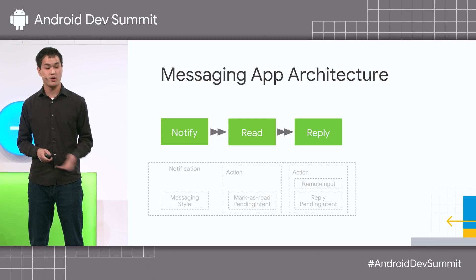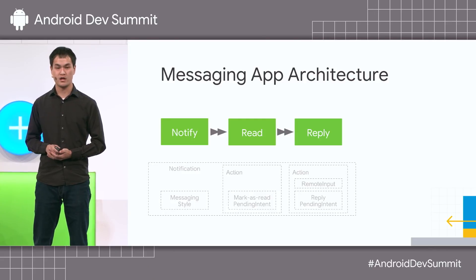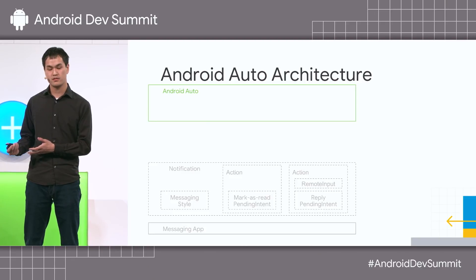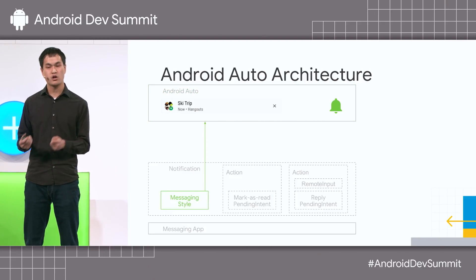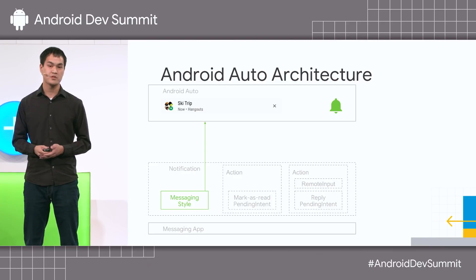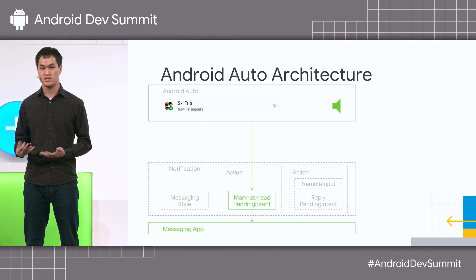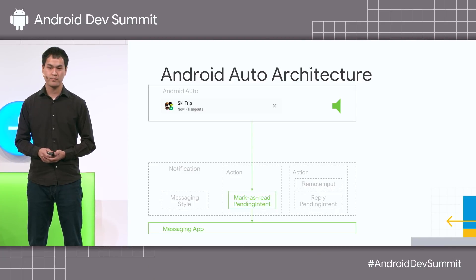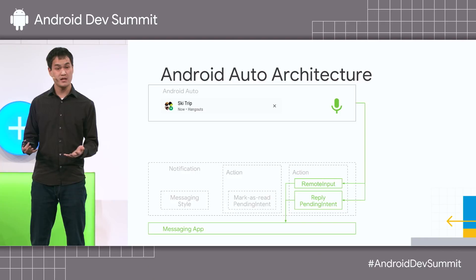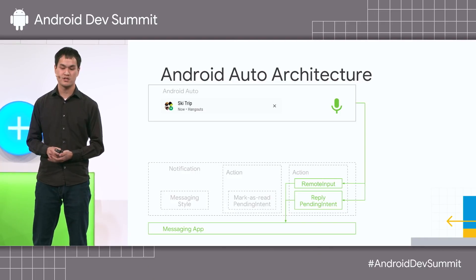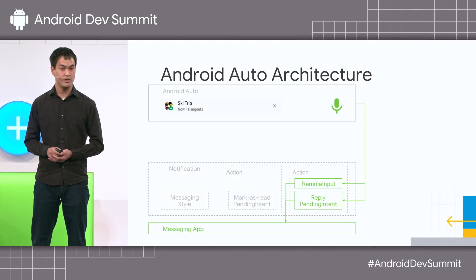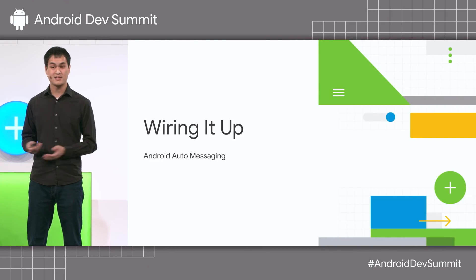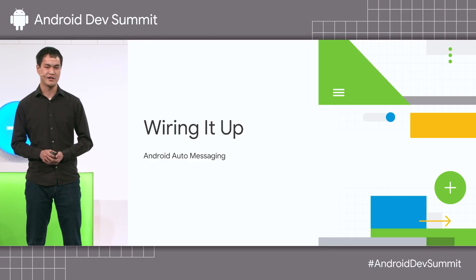Moving on to the other side of the notification, we can see how Android Auto leverages these objects. Android Auto will first post an in-car notification, and once tapped on, will read aloud the messages contained within. The mark as read pending intent is then fired. The user is given the choice to respond, and if taken, a transcription of that response is set in the remote input. The reply pending intent is then fired. And that's the entire Android Auto flow — let's see how we can put that into code.